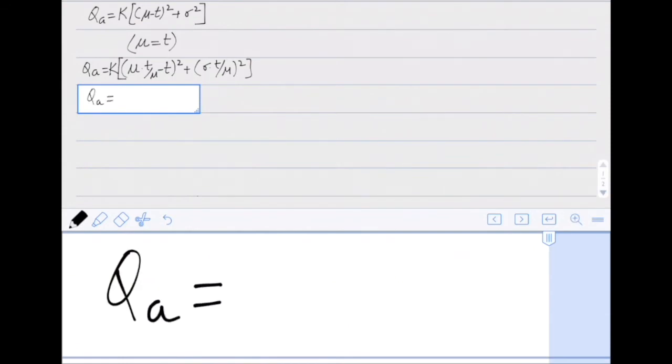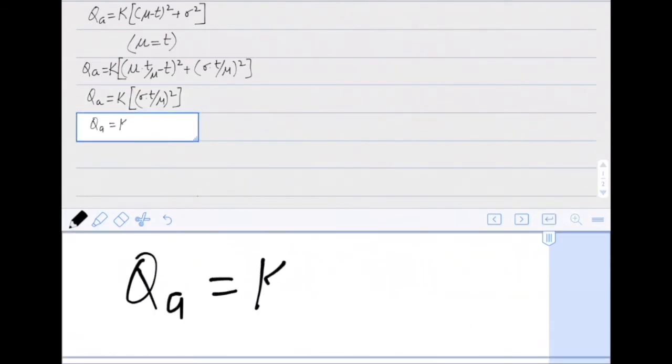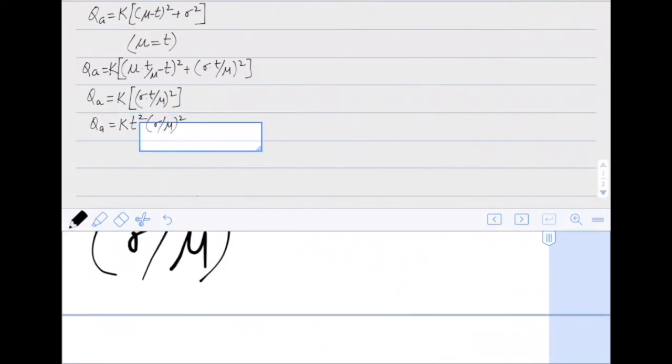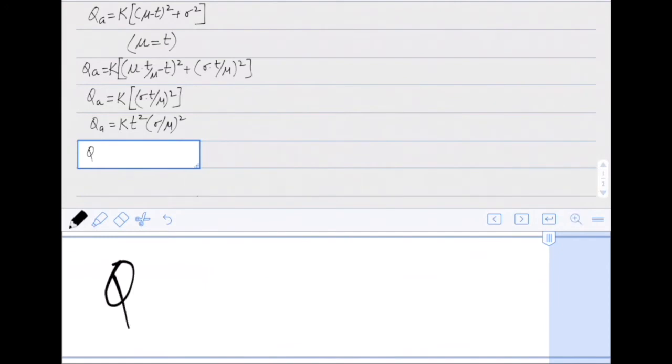If we solve this equation, we get QA equals k times—the first part becomes zero, so we are left with sigma (t/mu) whole square. If we take t out, this becomes t square and we are left with (sigma/mu) whole square. This k into t square can be replaced with a new constant K prime into (sigma/mu) whole square.